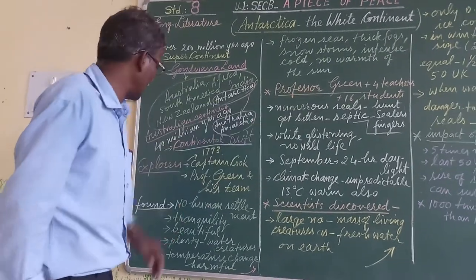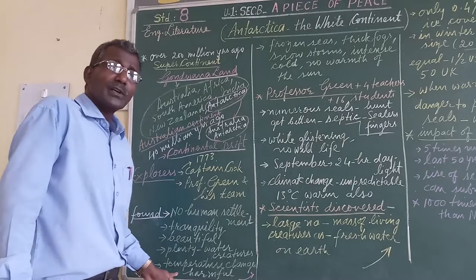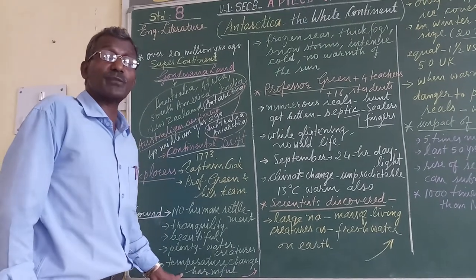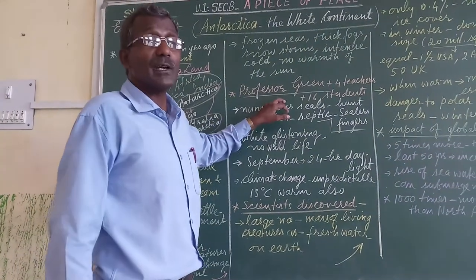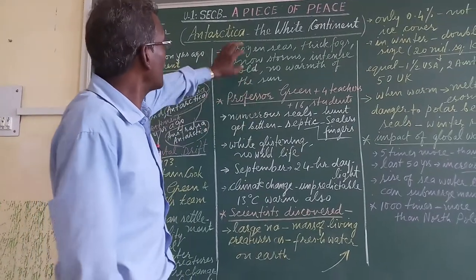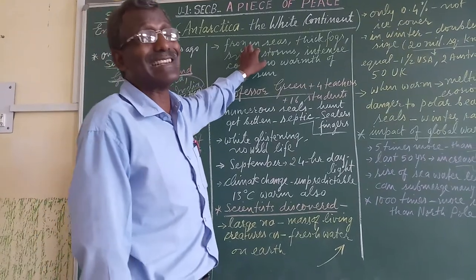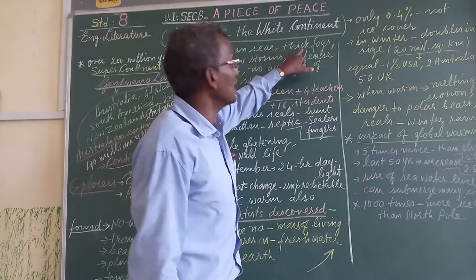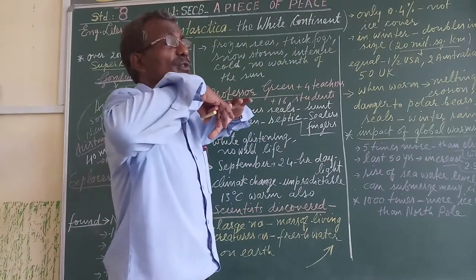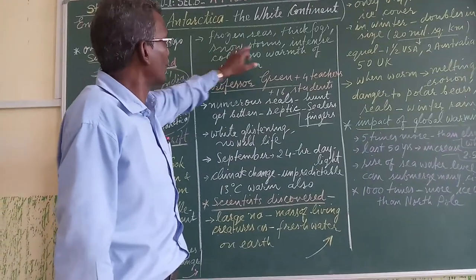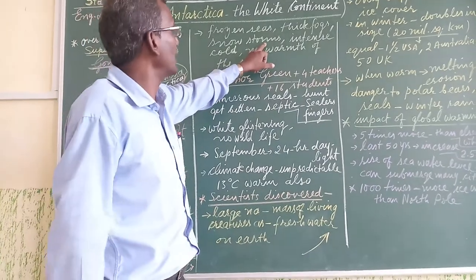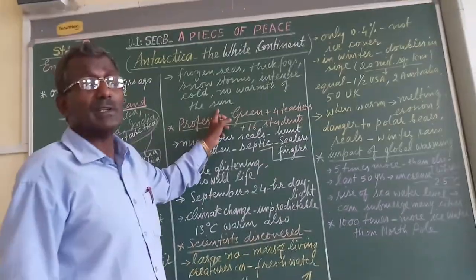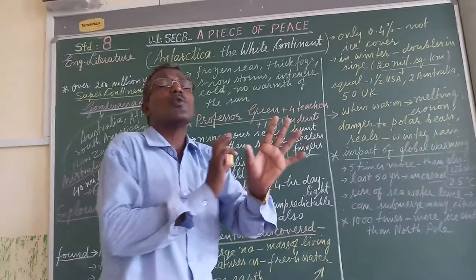They found sea creatures both small and big. They found there is constant change and fluctuation of temperature, very harmful for Antarctica and every component of it. They found the seas are in a frozen state. The fogs are very thick, snowstorms occur there, there is intense cold, and no warmth of the sun — they can see the sun but feel no warmth.